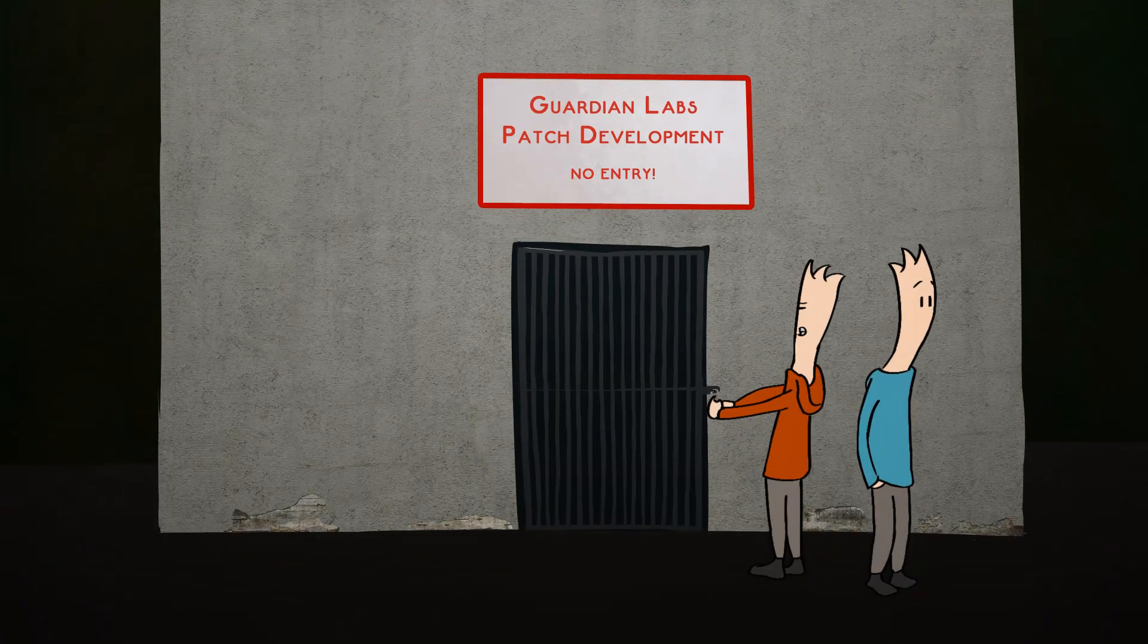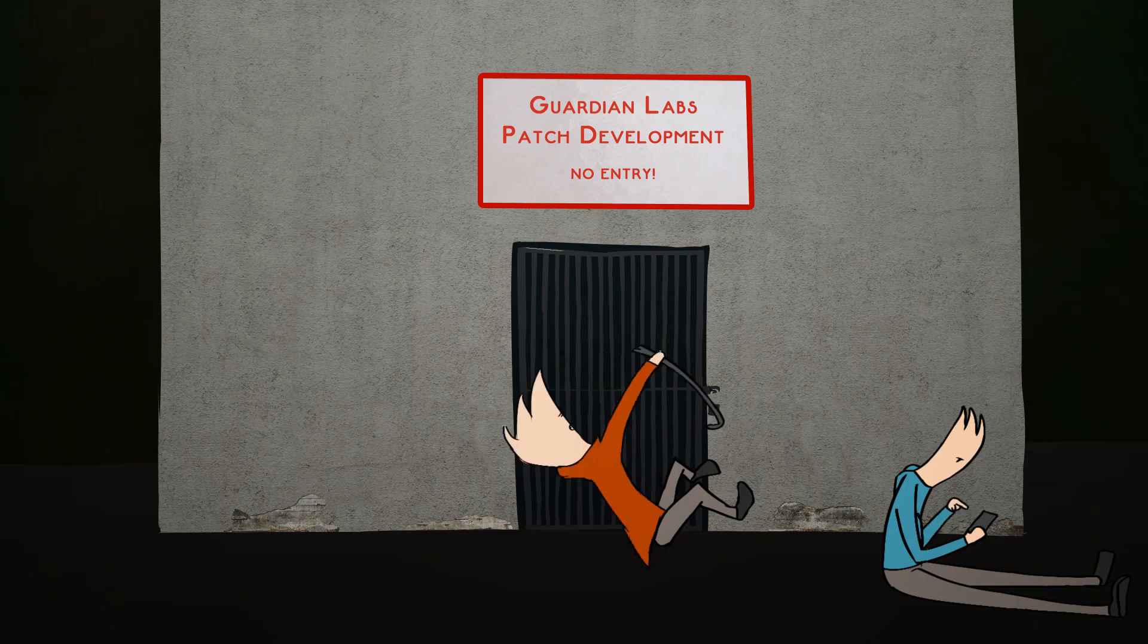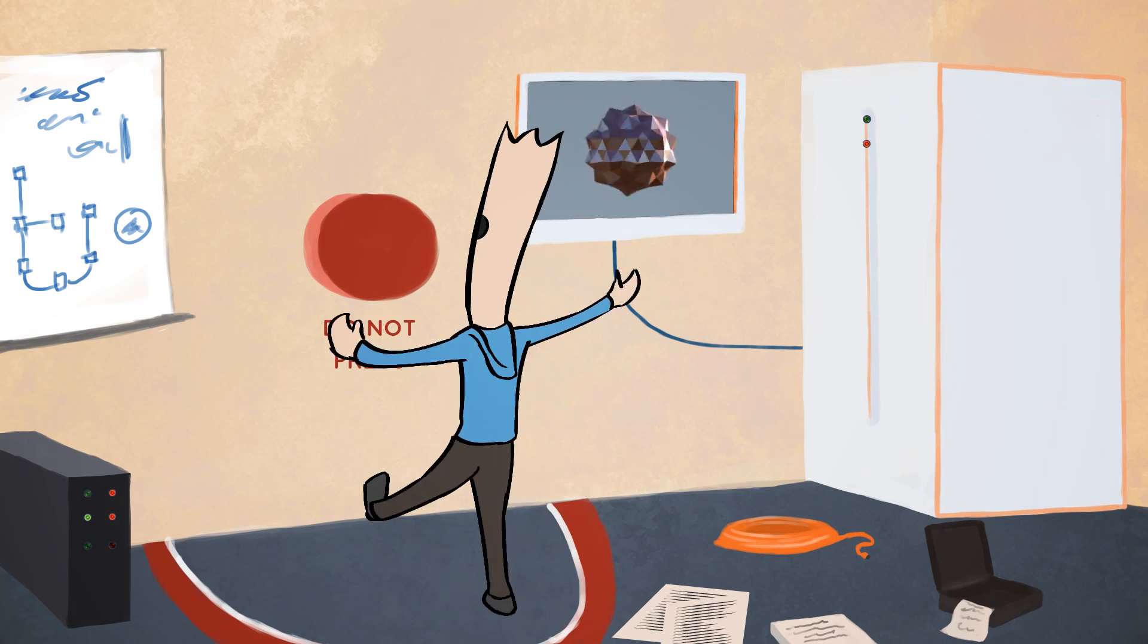When Robert and James decided they needed a Guardian patch, they turned to their talents to acquire one. While rummaging through the facility, however, they had a bit of an accident.